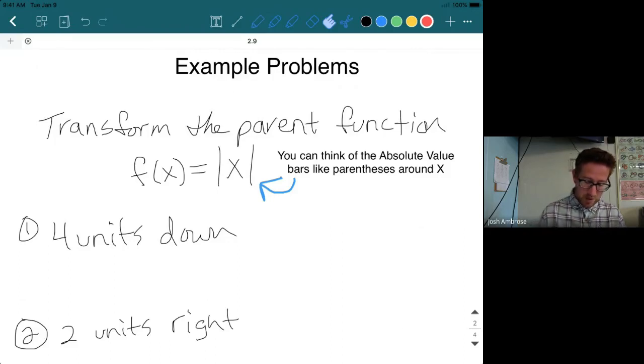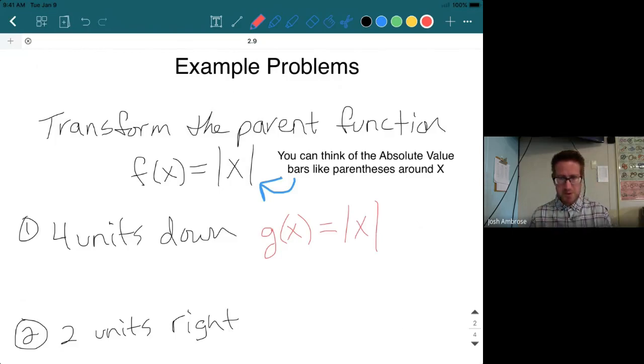Let's jump into our first one here. We are asked to translate four units down. Now, if you remember back in section six, a vertical translation that's up and down is something that is outside parentheses, and in this case, outside the absolute value bars. So let's jump into the first one. We will represent this as g(x) equals, and remember absolute value bars have to be around the x, and vertical translations are outside of that. So four units down, it's a very literal translation. Let's say minus four. There we go. Done deal.